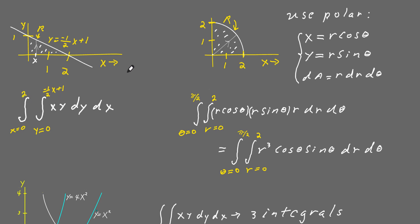Now if you wanted to do the integral over this quarter of a circle, since you're dealing with a circular region it would be convenient to use polar coordinates. So you'll have x equal to r cosine theta, y equal to r sine theta, and dA equal to r dr d theta. Then x becomes r cosine theta, y becomes r sine theta, and the area element becomes r dr d theta.